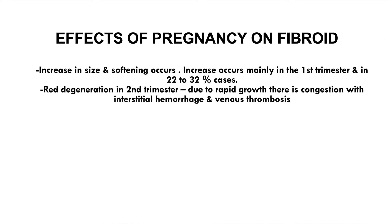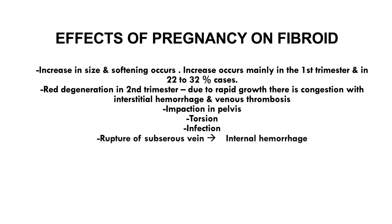The effects of pregnancy on fibroid: increase in size and softening usually occurs, mainly in the first trimester and in 22 to 32% of cases. Red degeneration is commonly seen in the second trimester due to rapid growth, with congestion, interstitial hemorrhage, and venous thrombosis. Very large fibroids can cause impaction in the pelvis. Torsion and infection are also common, and internal hemorrhage is mainly due to rupture of the subserosal vein.